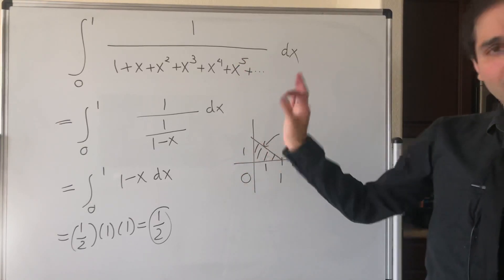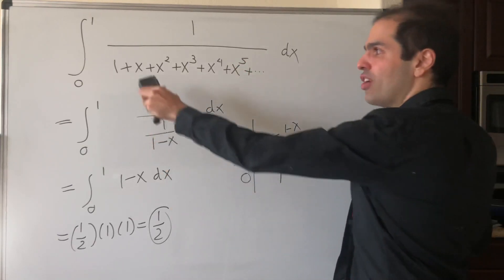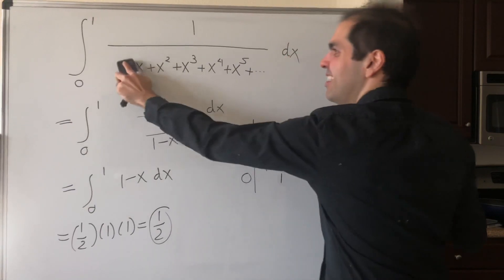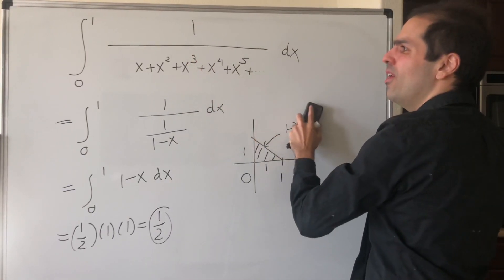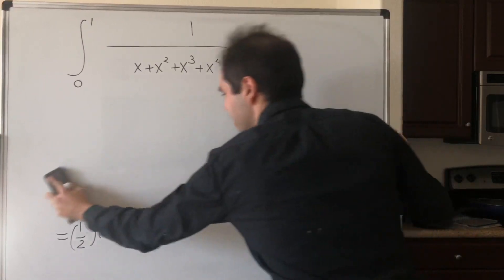And another thing I wanted to say, what if you forget about this 1, and you do the integral from 0 to 1 of 1 over x times this?